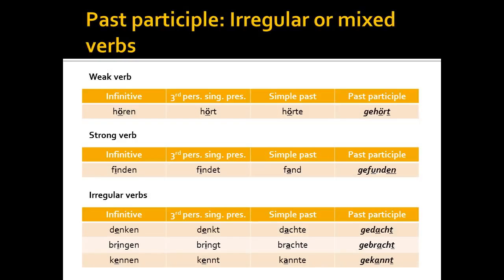Irregular verbs manifest characteristics of both weak and strong verbs. For example, 'denken': the vowel in the stem changes from 'e' to 'a' — like a strong verb — but it adds a 'ge-' prefix and a '-t' suffix, like a weak verb. Same with 'bringen': the 'i' goes to an 'a,' and it adds a 'ge-' prefix and a '-t' suffix. And 'kennen' — the one we've been looking at in our example — changes from 'e' to 'a' and adds a 'ge-' prefix and a '-t' suffix. So to summarize: irregular verbs manifest characteristics of both weak and strong verbs.